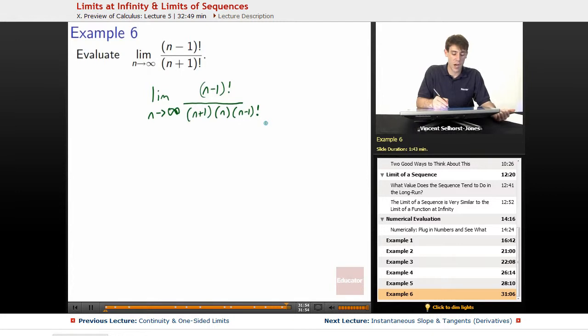So we've got (n-1)! on the top, and (n+1) times n times (n-1)! on the bottom. We can cancel the (n-1)! factorials now. Now I've got the limit as n goes to infinity of 1 over (n+1) times n.